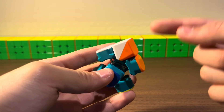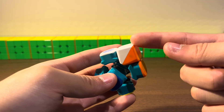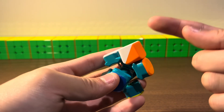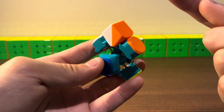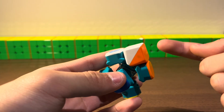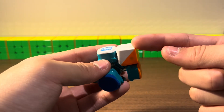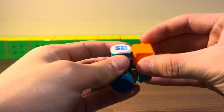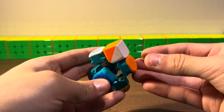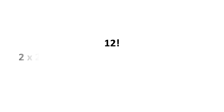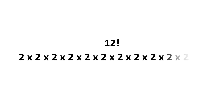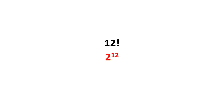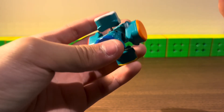Also, if we consider the two orientations of each edge, we have to multiply 12 factorial by the number of orientations. Each edge has two orientations, and there are 12 edges, so we multiply by 2 to the power of 12.